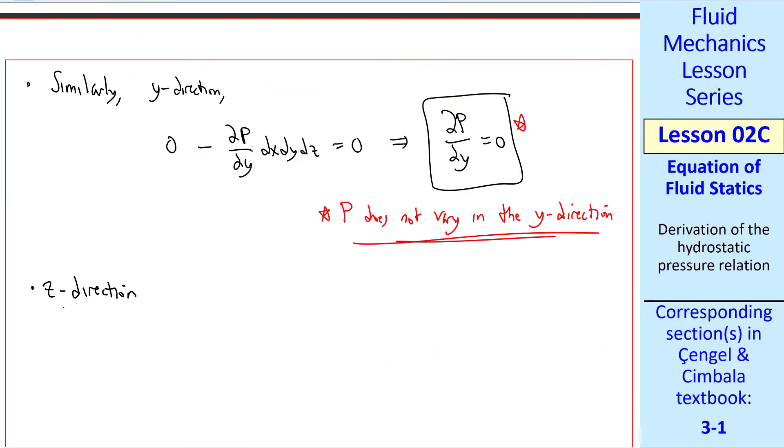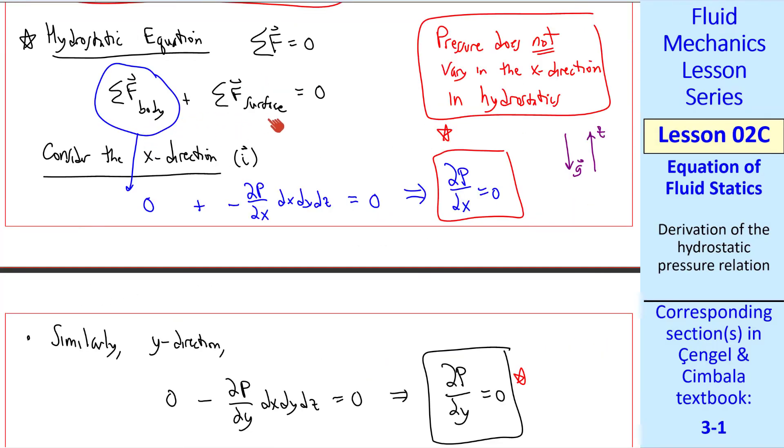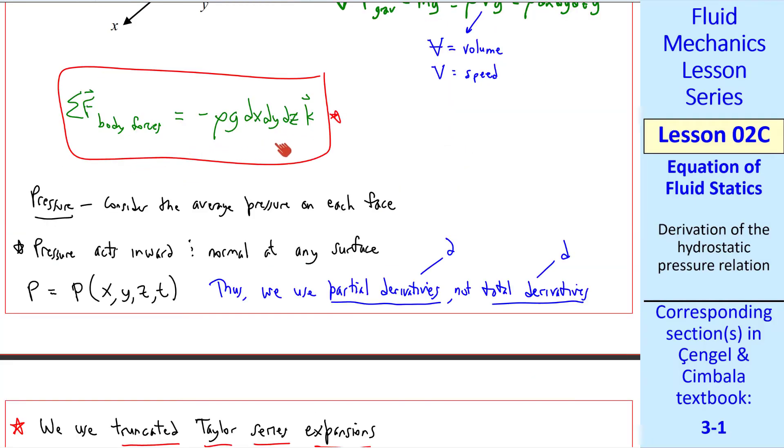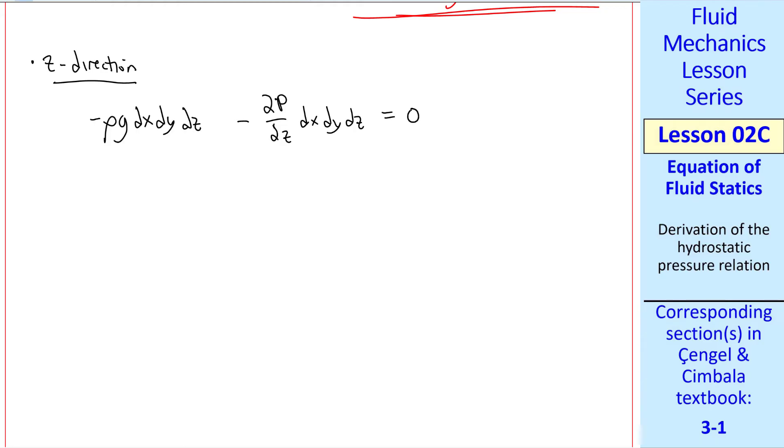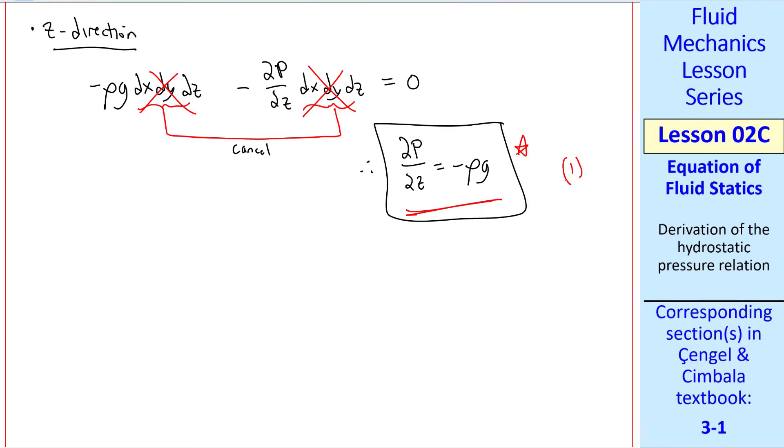Now let's consider the z direction. Now we have both a body force and a surface force in the z direction. We already solved for the body force and the surface force. So in the z direction, we write the body force and the surface force, and they must sum to zero. The volume of the fluid element, dx dy dz, cancels in both terms. Therefore, del p del z is equal to negative rho g. I'll call that equation one.